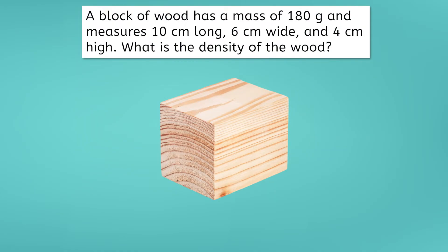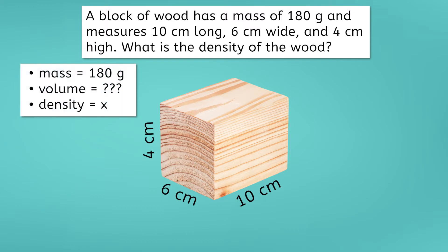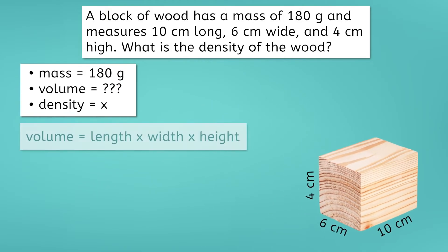Okay, example two. A block of wood has a mass of 180 grams and measures 10 centimeters long, 6 centimeters wide, and 4 centimeters high. What is the density of the wood? If you remember from our previous example, our first step to solving density problems is to write down what we know. We know the mass is 180 grams, so that goes with the m in our list, and our density is what we are solving for, so we put an x next to density. What about volume?